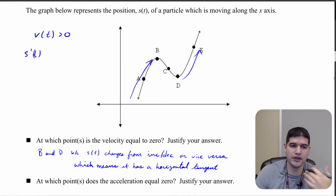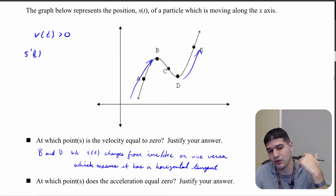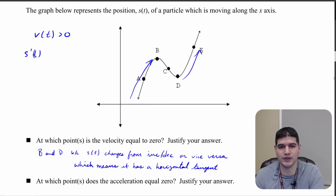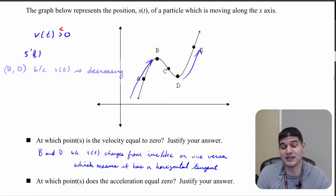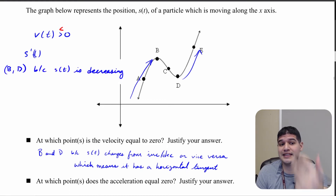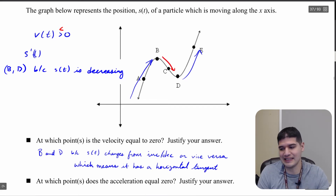Now, when is the velocity negative? Velocity is negative when s prime of t is negative, which is when s of t is decreasing. This function is decreasing from b to d, so velocity is negative on the interval b to d.